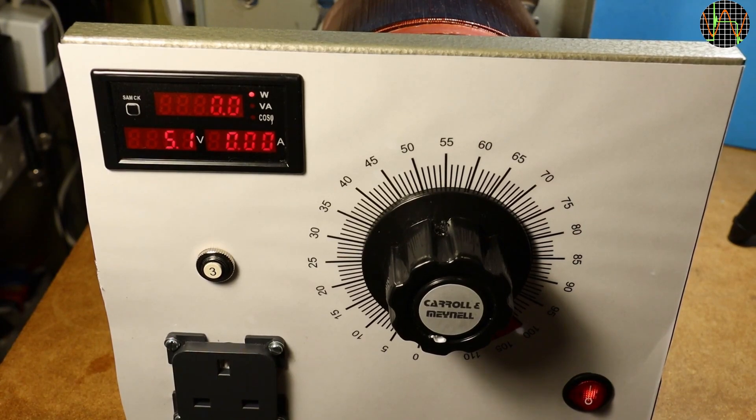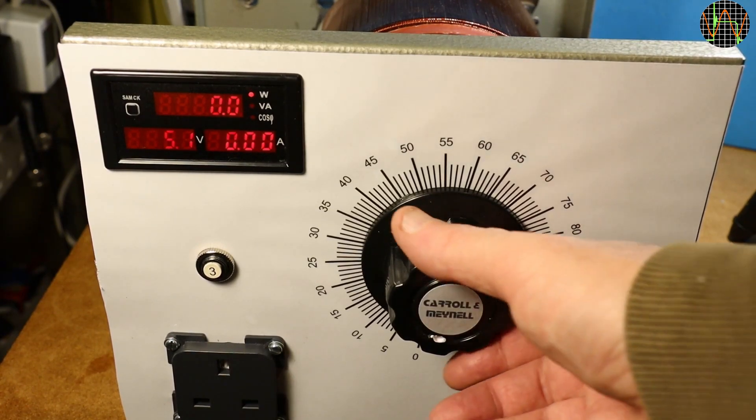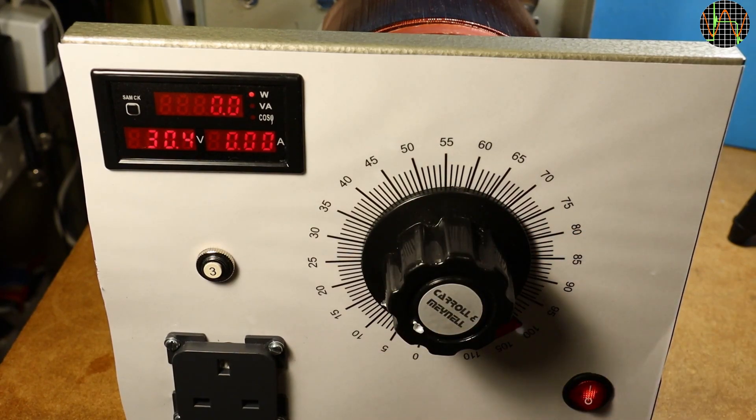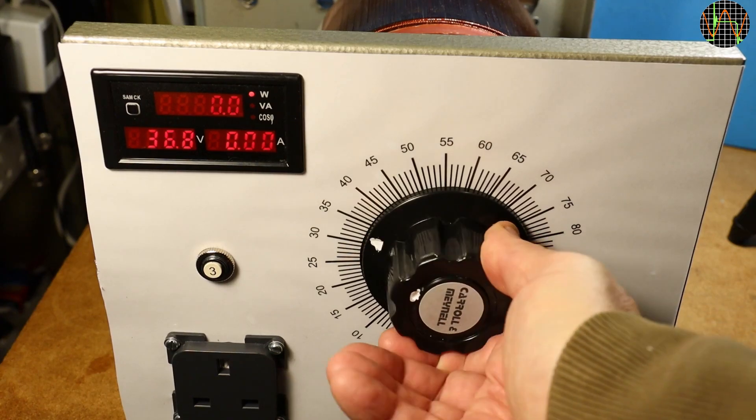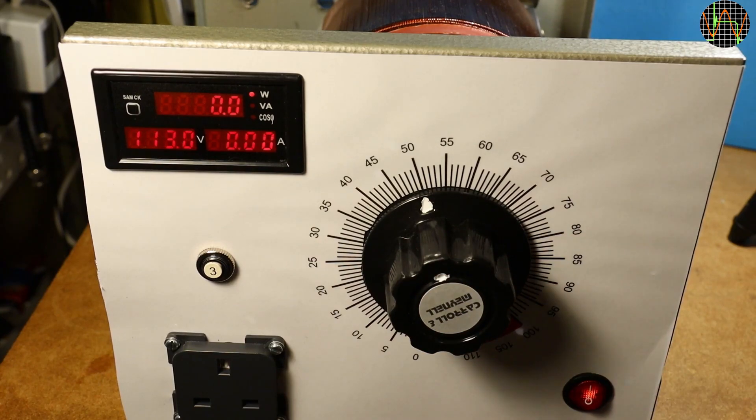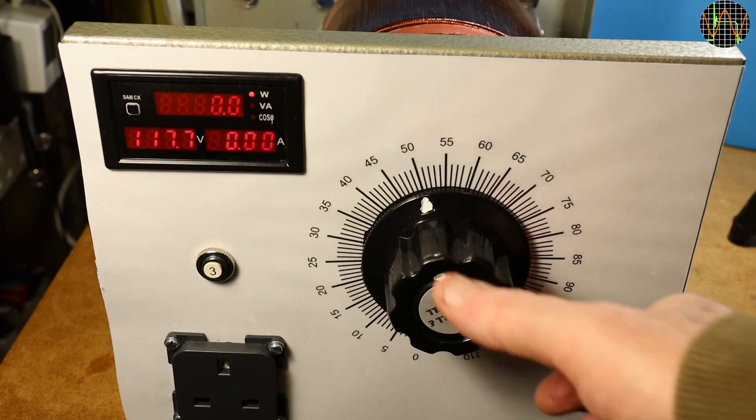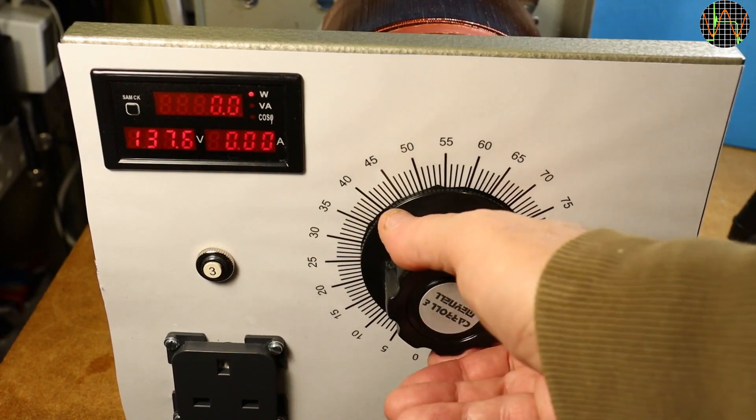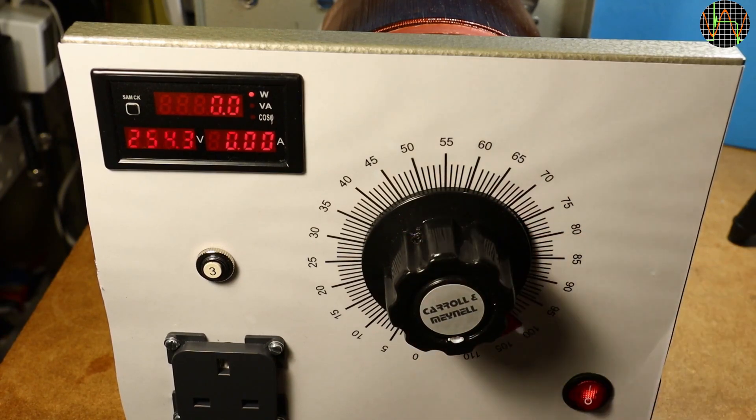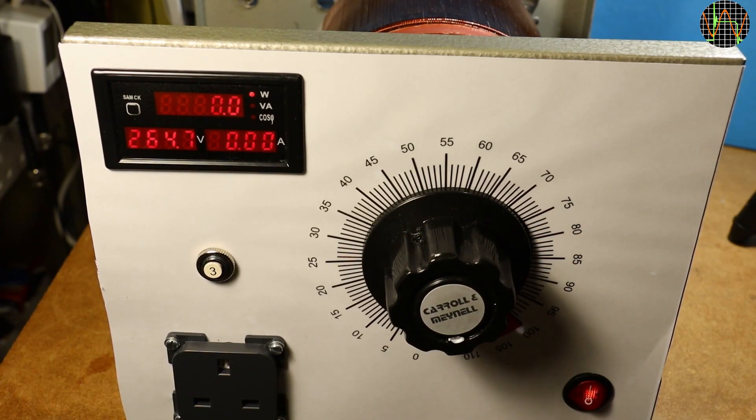This is the first run without any load. The lowest voltage isn't quite zero but close enough. At 50% it is close to 120V which means my scale is reasonably correct. Of course, the exact value depends on the input voltage at the moment. And the same is true for the maximum voltage which is almost 265V.